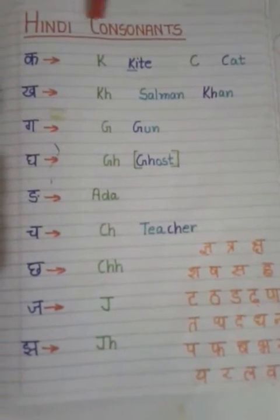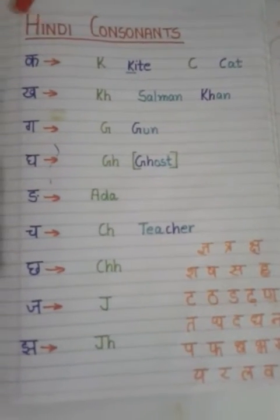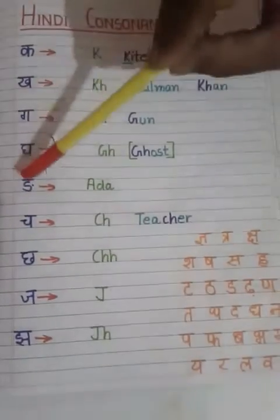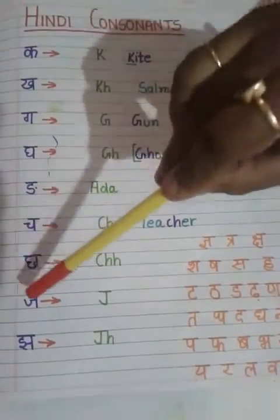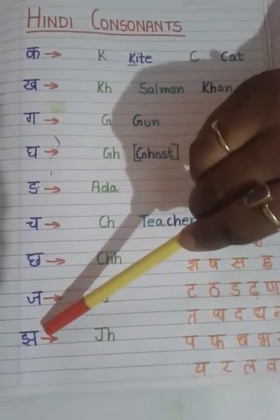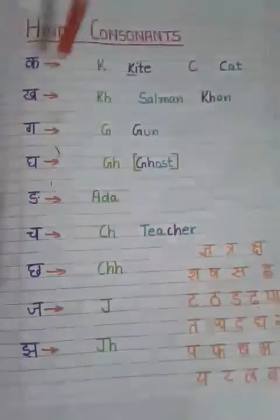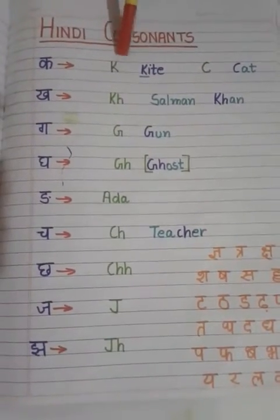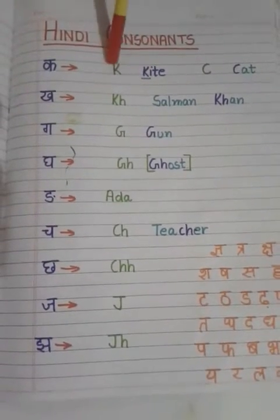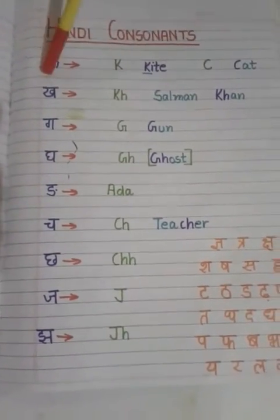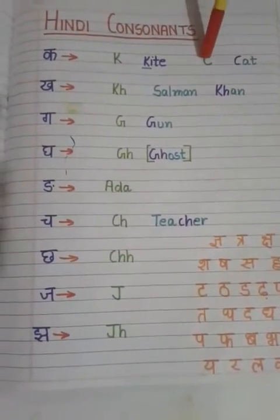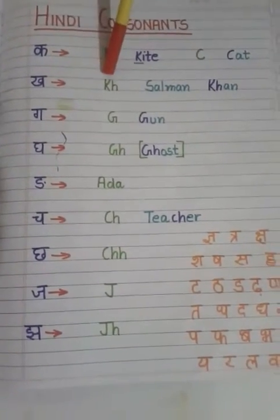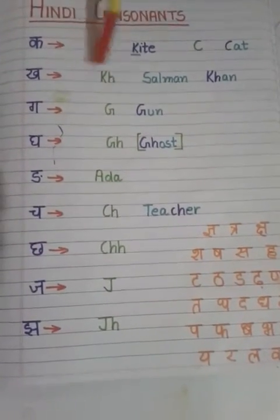I hope the vowels were clear to you. Now for the consonants — in Hindi alphabets we speak: Ka, Kha, Ga, Gha, Na, Cha, Chha, Ja... You may not know these sounds, so I have given you English letters and words. For the 'K' sound, take the word 'kite' — Ka. Or 'cats' — Ka. So the sound is 'Ka'. For 'Kha', I have not found a direct English word, so I have used the famous actor's name: Salman Khan — the 'Kh' sound is there.